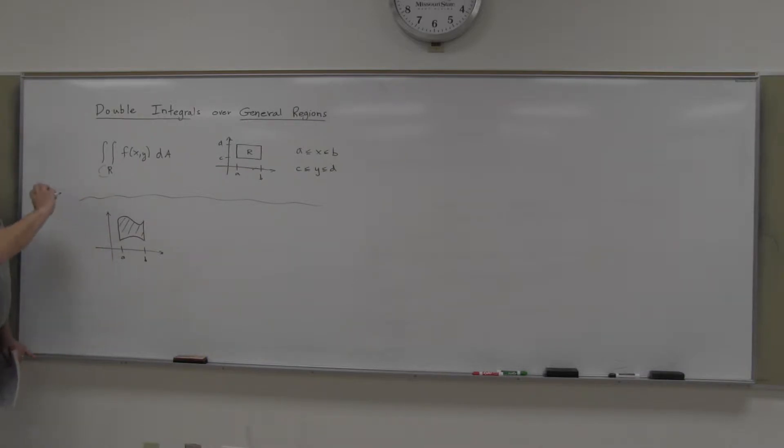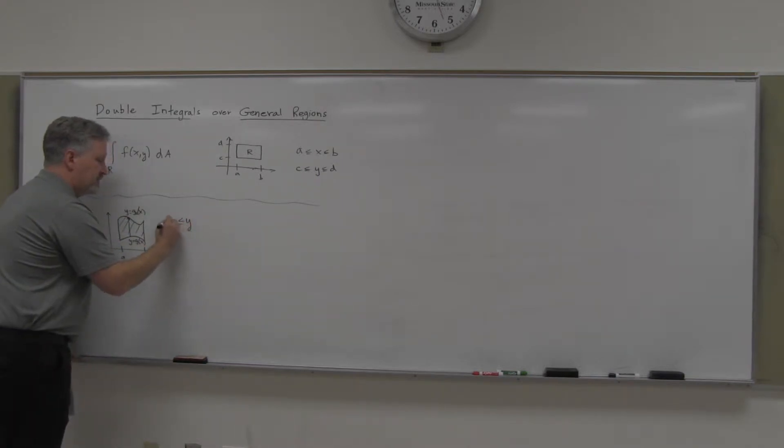No, the Y's, and this is kind of how we'll indicate this, the Y's go from this curve up to this curve. They go from this Y to this Y. Well, of course, this Y is a function of X, call it G1(X). And then this Y is G2(X). So the Y's are going from G1 to G2.